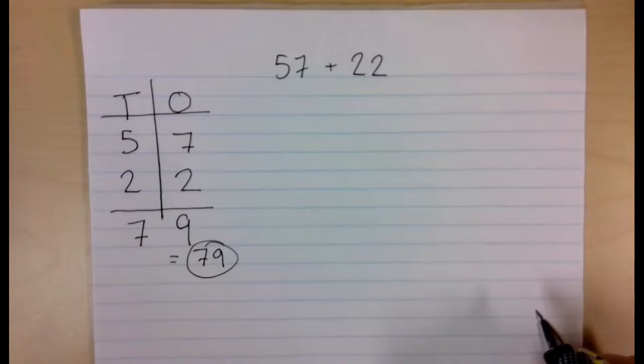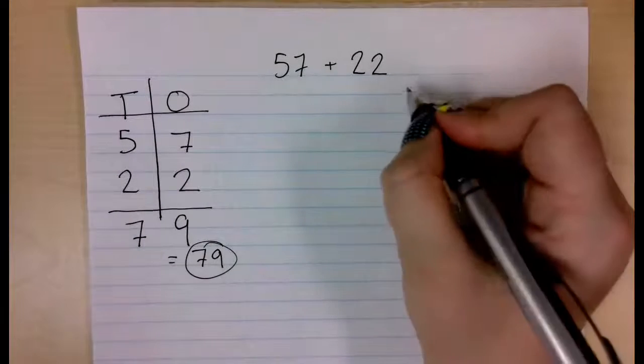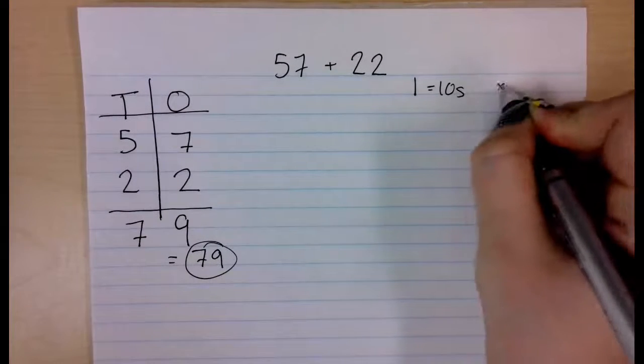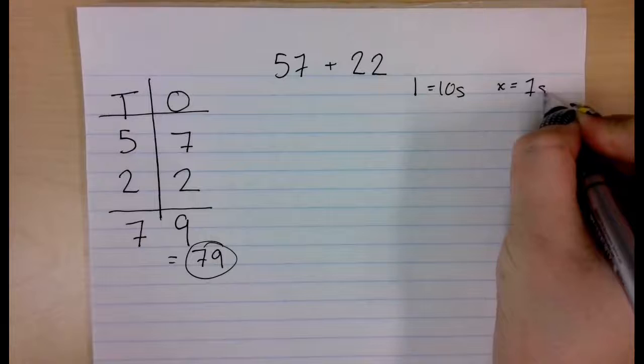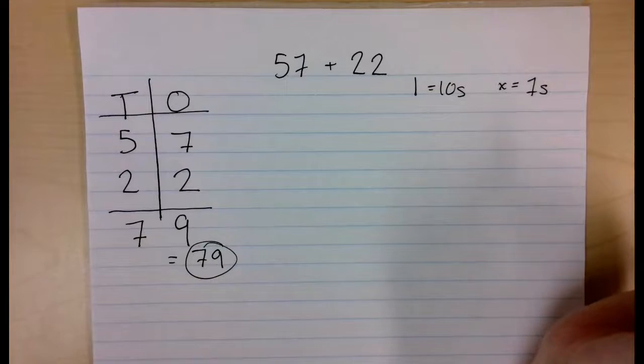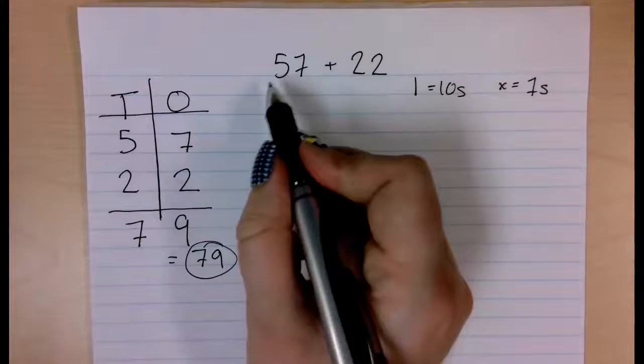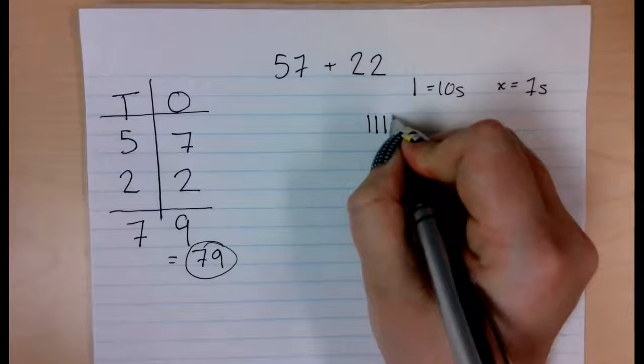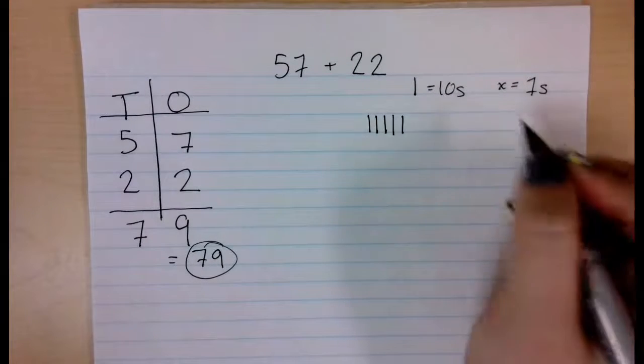Alright, let's do our base 10 blocks. So remember, I use a line for my 10s, and a little x for my 1s. So I am going to draw out 57. So I need 1, 2, 3, 4, 5 tens, and I need 7 ones.